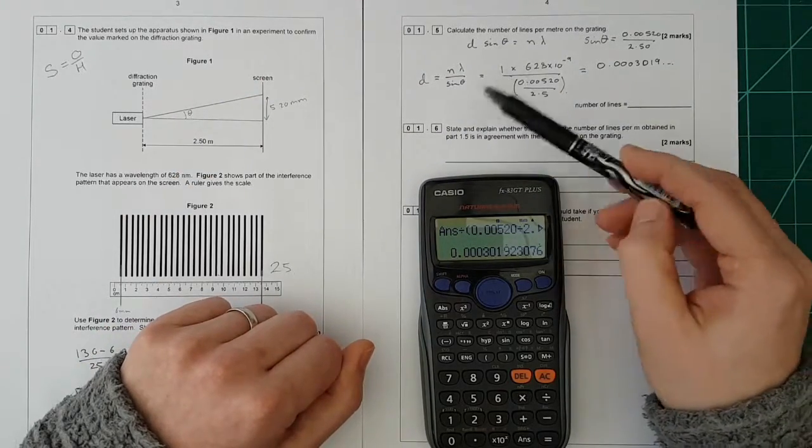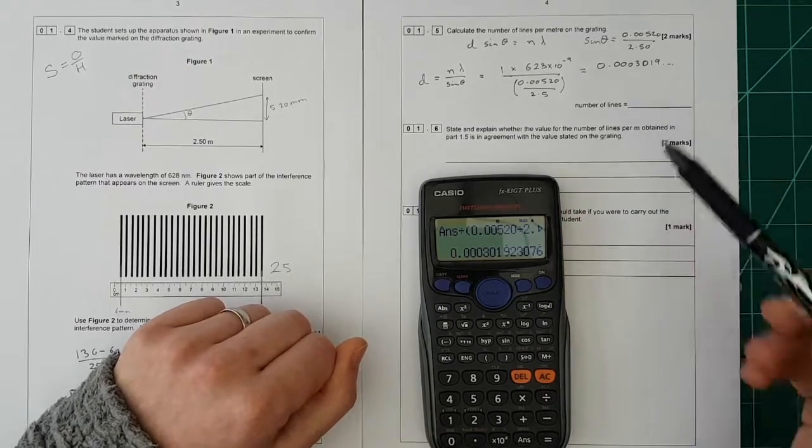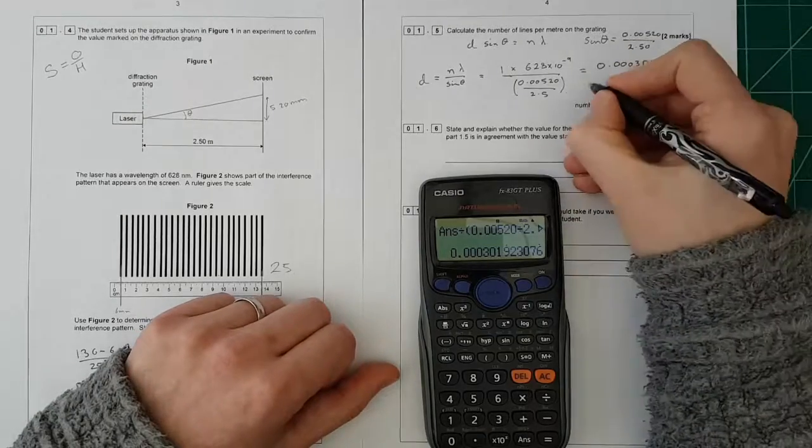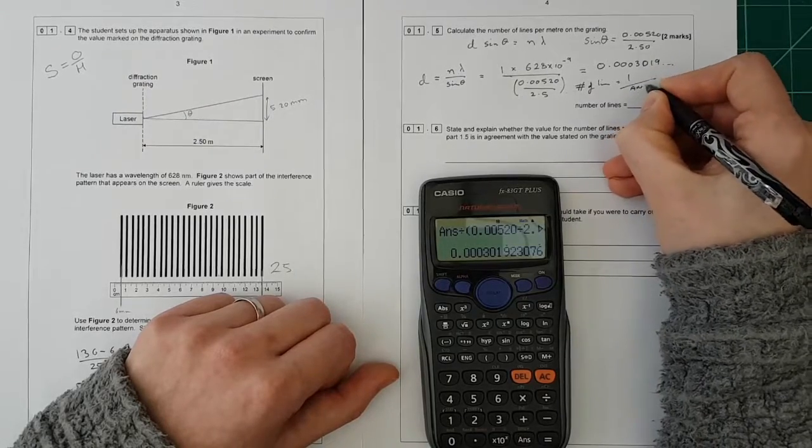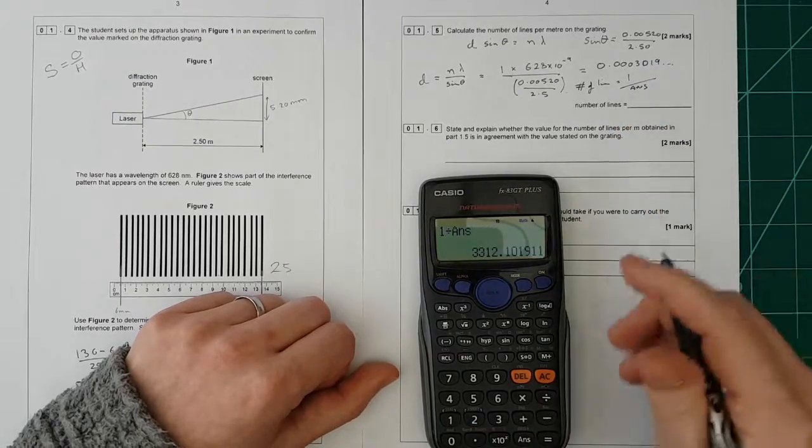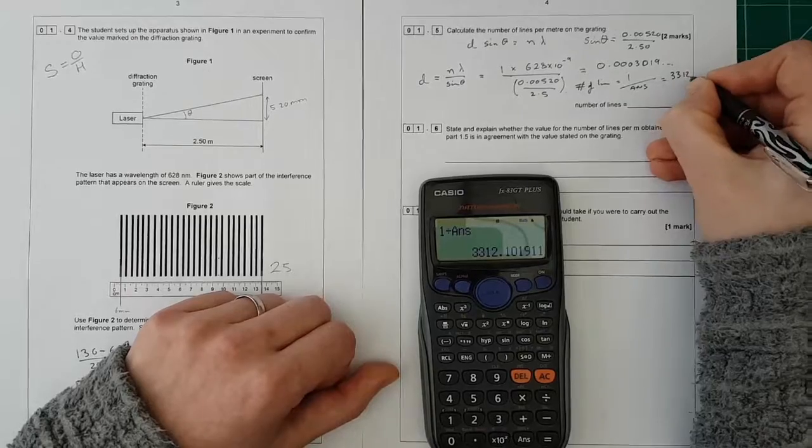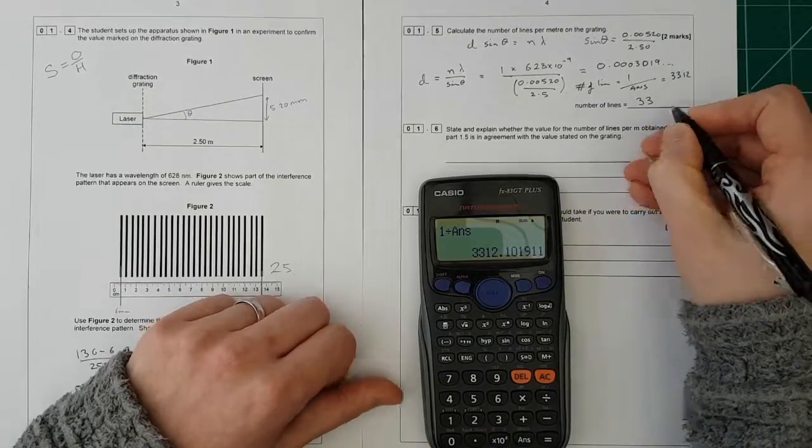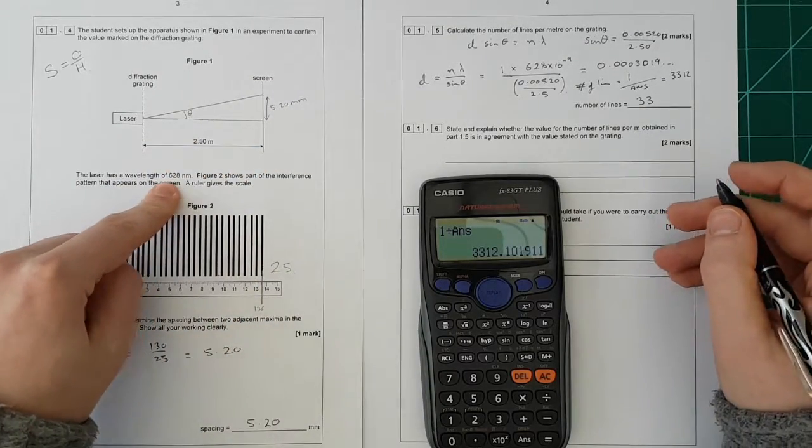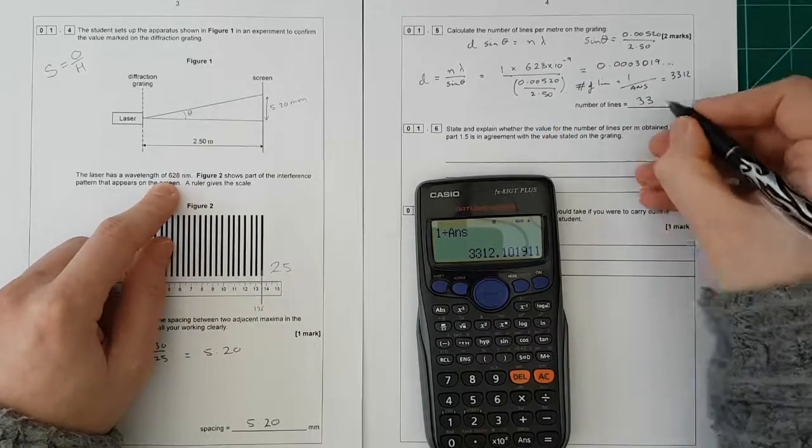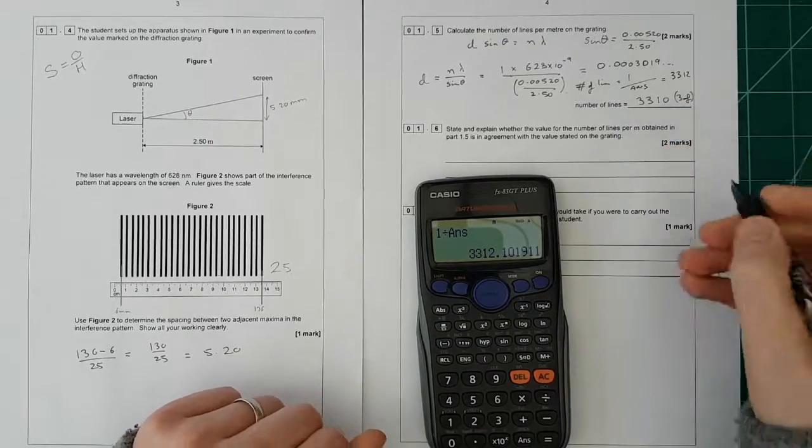That is the d which is 0.003019 etc. Now d is the spacing per line, so the number of lines we need to do 1 divided by that. So the number of lines is equal to 1 divided by answer, which is 3,312, which is going to be 3,300. Now we've got to think about significant figures. So we can put this to 3 significant figures, 3SF. And there's no units there because it's just number of lines.